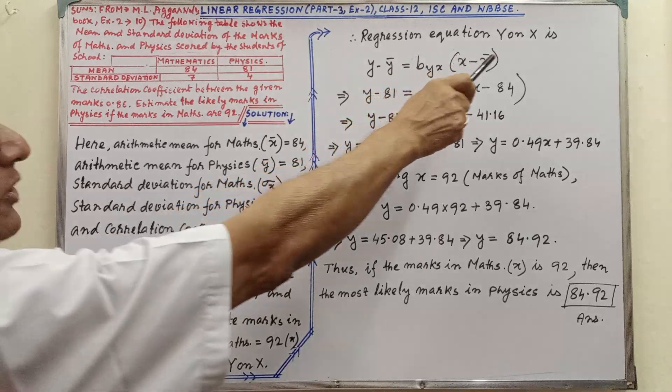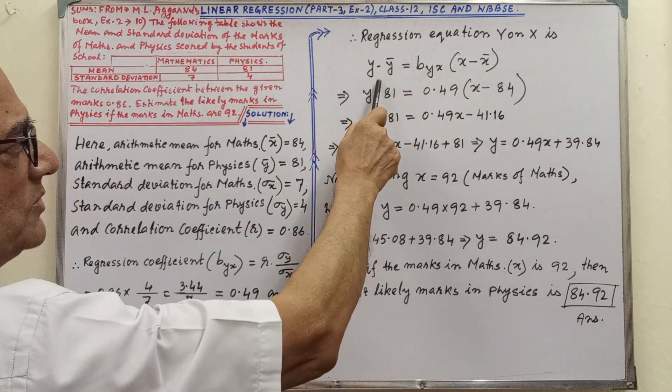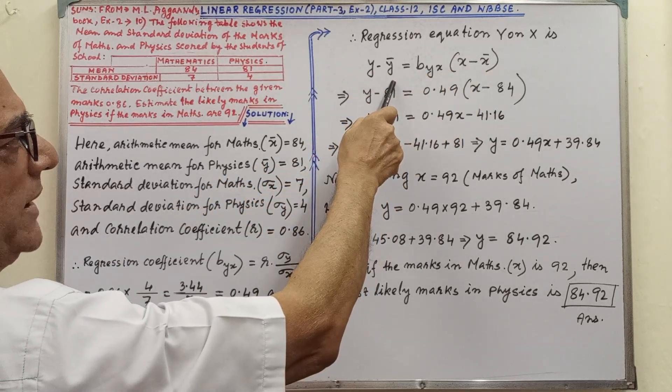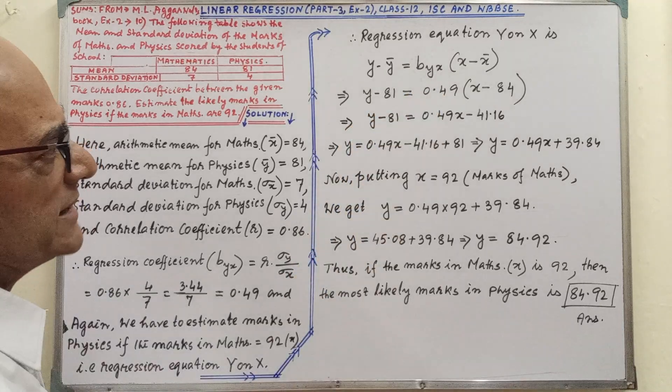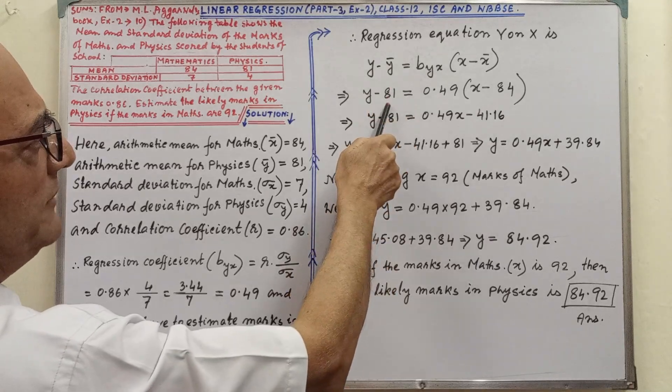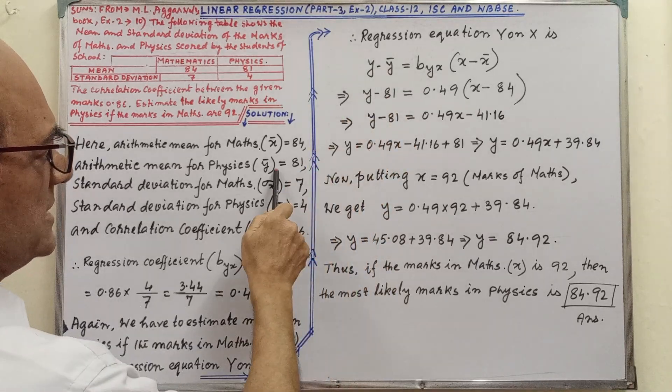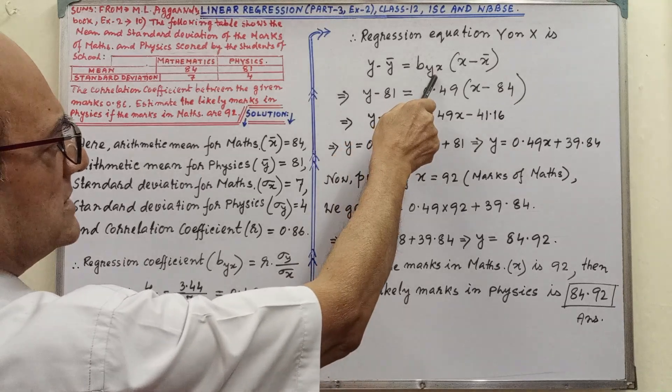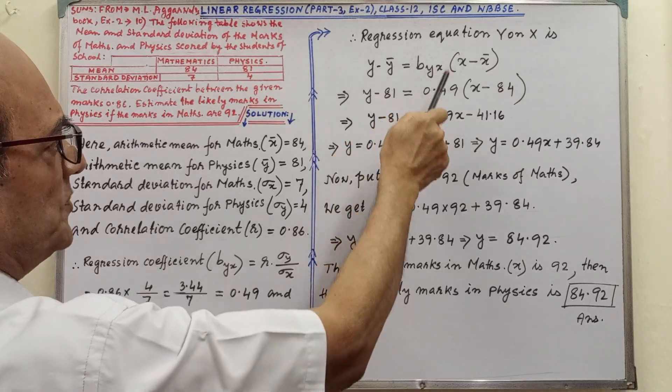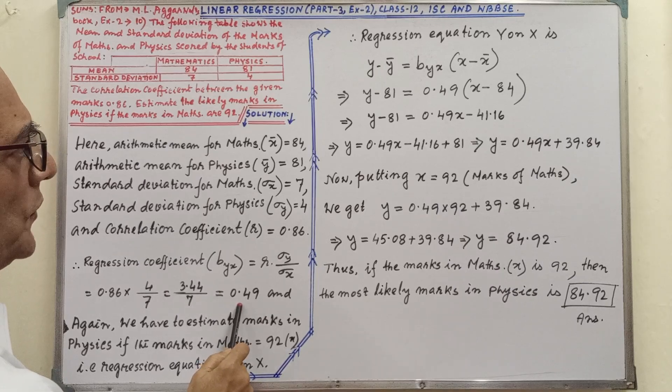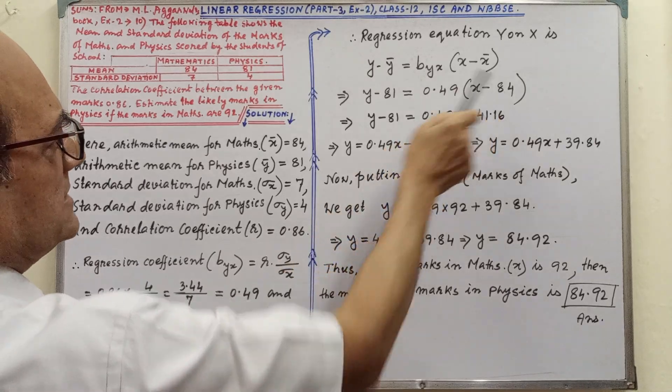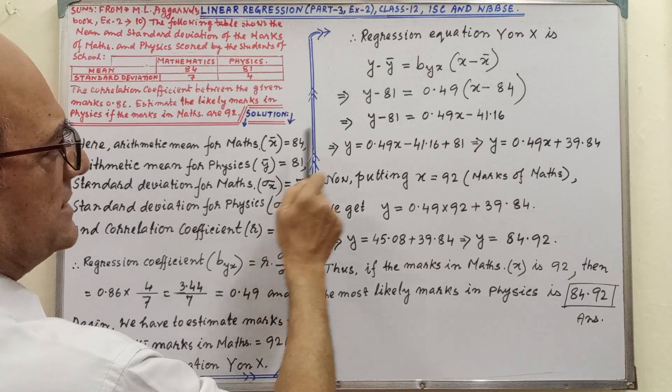Therefore, regression equation y on x - this is the formula: y minus y bar equals b_yx times x minus x bar. After writing the formula, relevant values: y bar is 81, regression coefficient is 0.49, x minus x bar, that is 84.